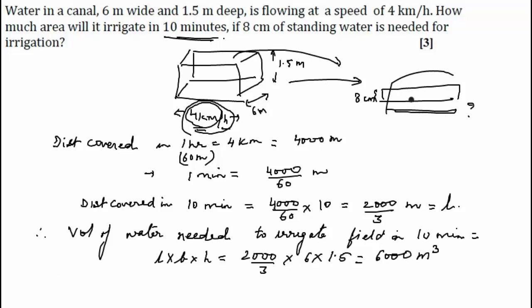So now we need to find the base area. Base area will be equal to volume collected. Therefore base area of the field is equal to volume of water upon its height. So that will be equal to 6,000 upon...